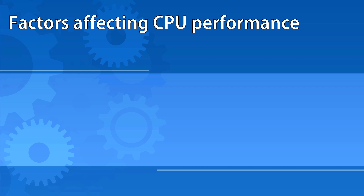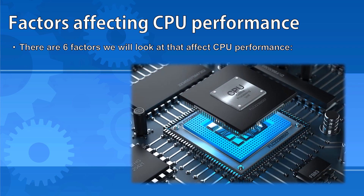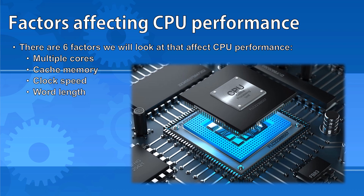There are six factors we're going to take a look at that can affect CPU performance. Some of these we already saw at GCSE. These factors are: multiple cores, cache memory, clock speed, word length, address bus width, and data bus width.